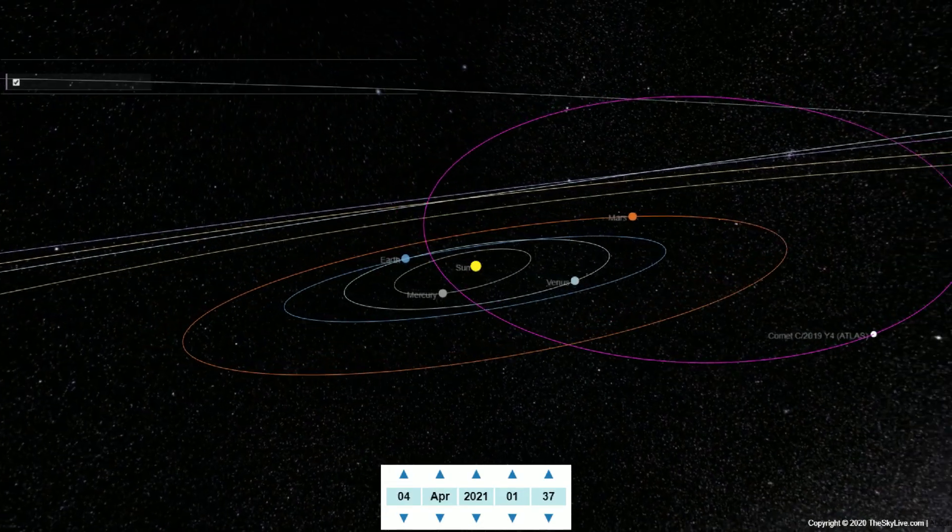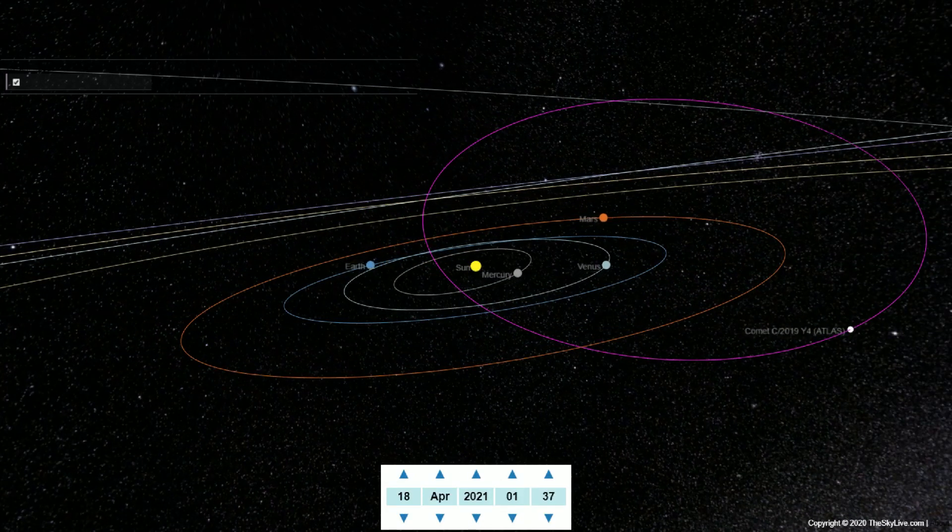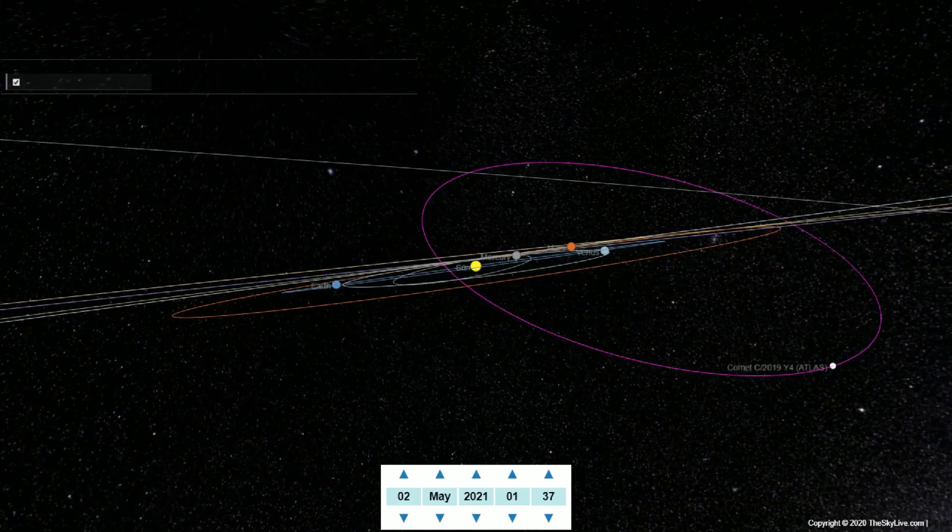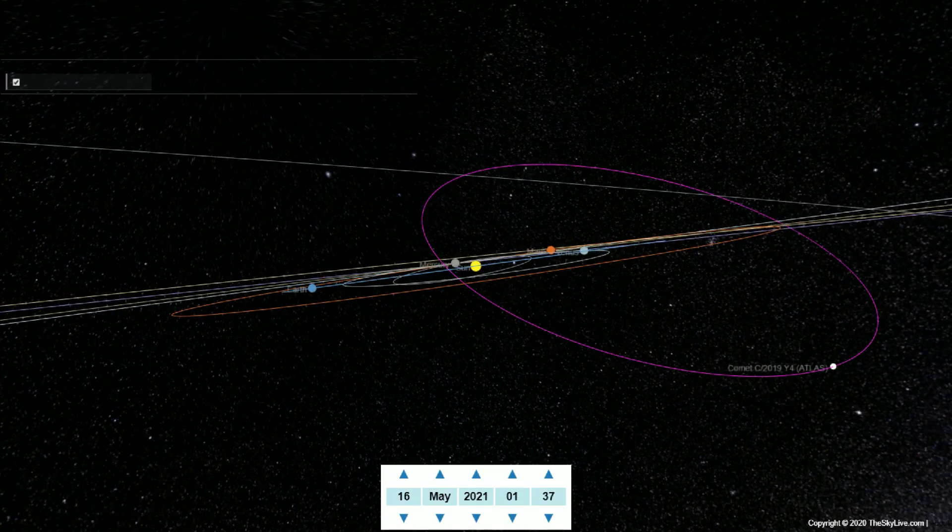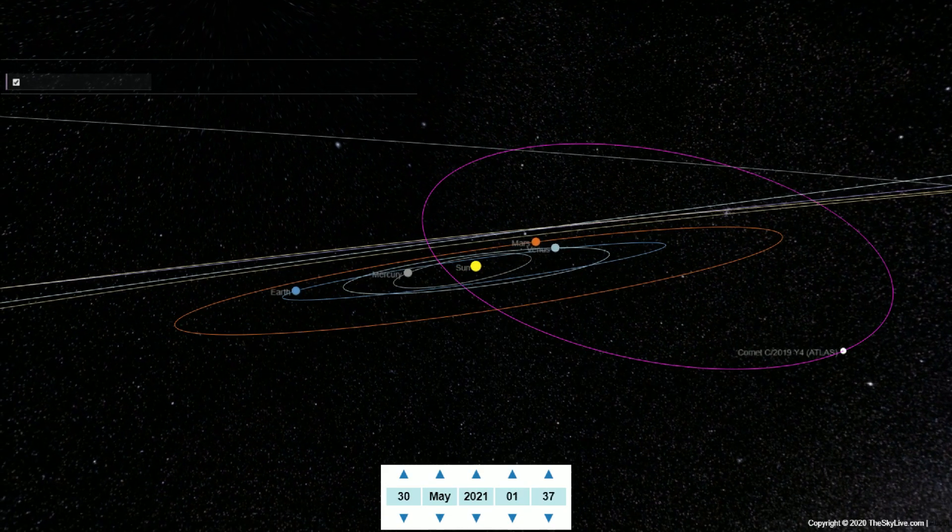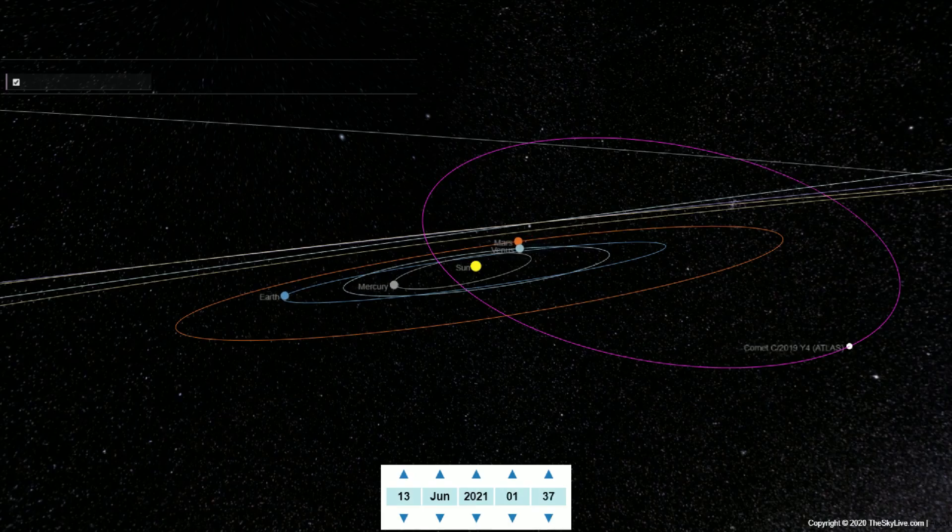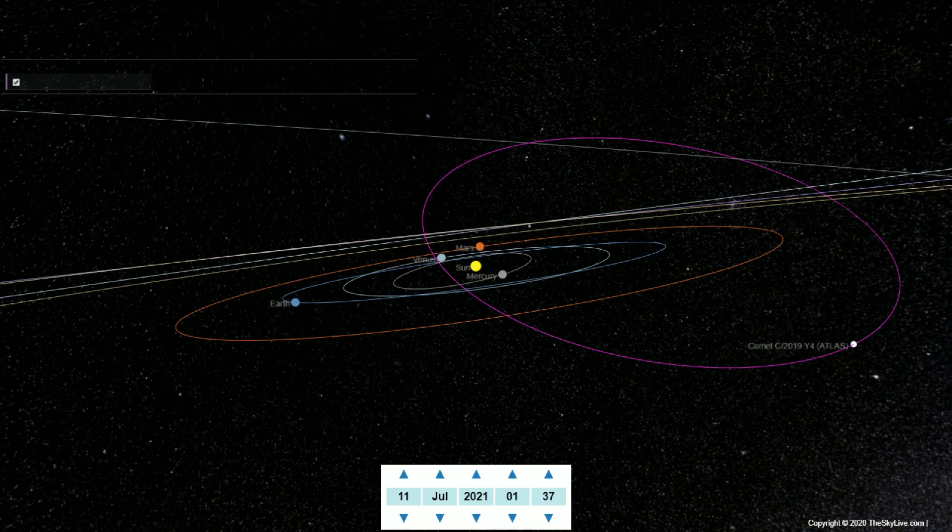Based on the JPL Small Body Database using an epoch of February 18, 2020, C-2019 Y-4 has an orbital period of approximately 6,000 years, but an inbound barycentric solution before the comet entered the planetary region shows an orbital period of about 4,800 years.